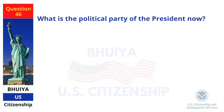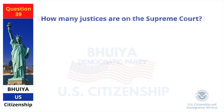What is the political party of the President now? Democratic Party. How many justices are on the Supreme Court? 9.